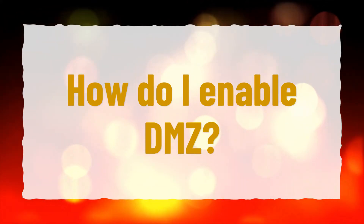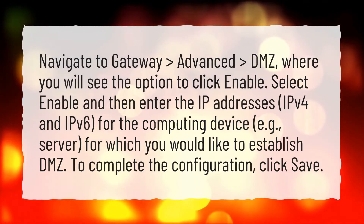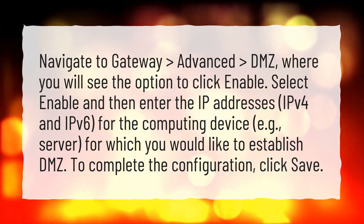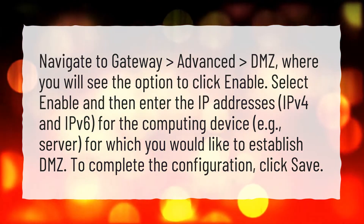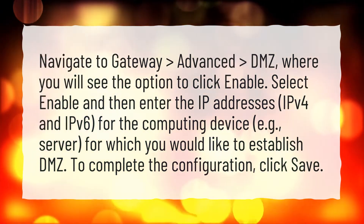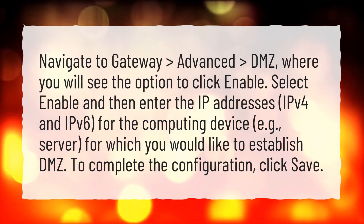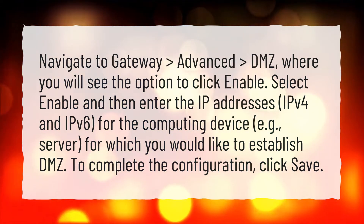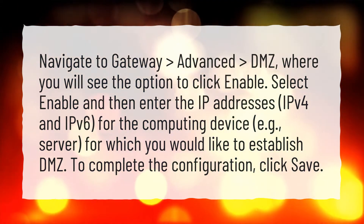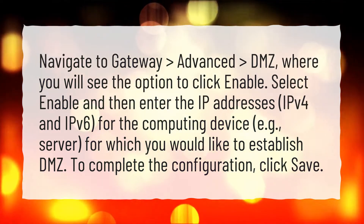How do I enable DMZ? Navigate to Gateway, Advanced > DMZ, where you will see the option to click Enable. Select Enable and then enter the IP addresses, IPv4 and IPv6, for the computing device.